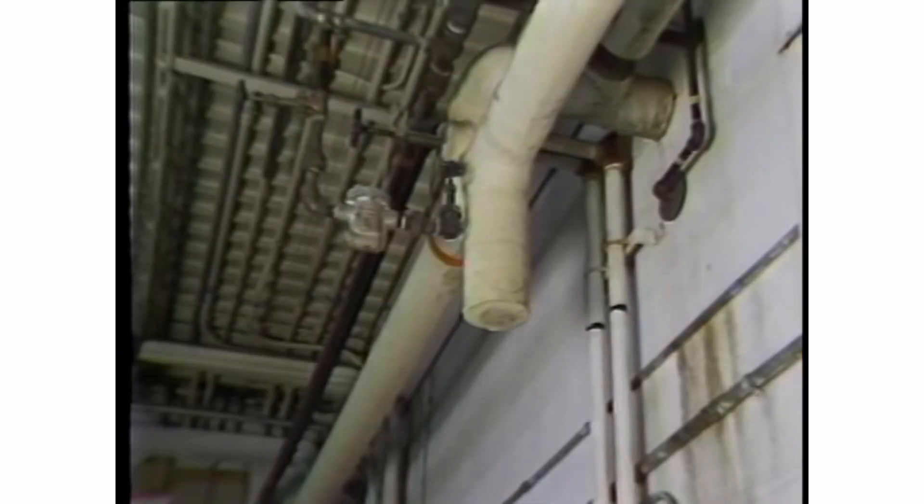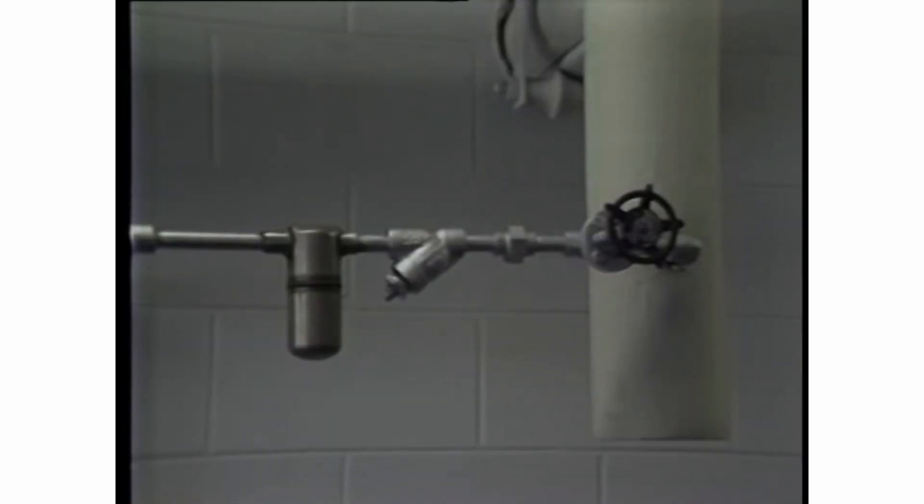Drip legs divert the condensate from the fast moving steam in the mains. They also provide a pressure differential during startup, enabling the trap to discharge the condensate to a gravity return.